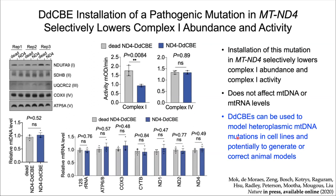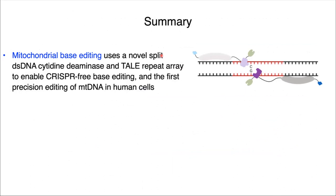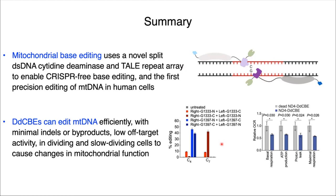In summary, we have developed mitochondrial base editing using a novel, split, double-stranded cytidine deaminase fused to TALE repeats to enable CRISPR-free C to T editing in mitochondrial DNA of human cells. DdCBEs can edit mitochondrial DNA efficiently if the cytidine is in the optimal position within the spacing region. Editing produces minimal indels and byproducts. The off-target activity of DdCBEs is also low, and we showed they could be used in both dividing and slow-dividing cells to cause changes in mitochondrial function.